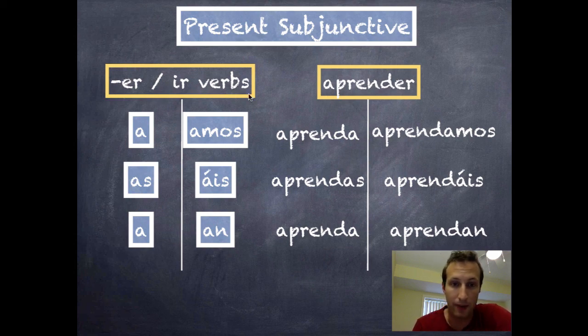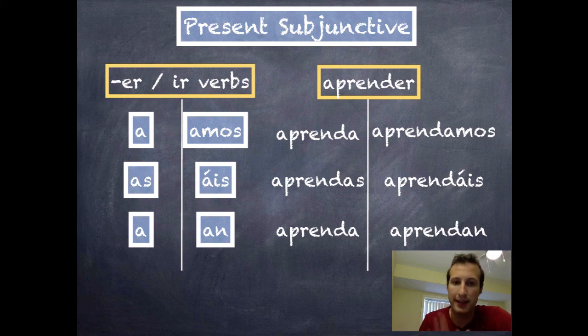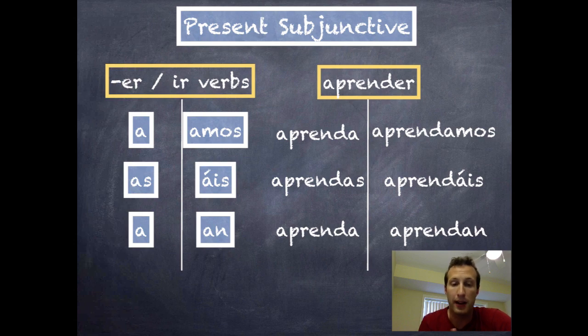Once again, these are the same conjugations as the indicative for AR. The two kind of switch places. The ER becomes the endings for the AR verbs, and the AR endings become the endings for the ER/IR.